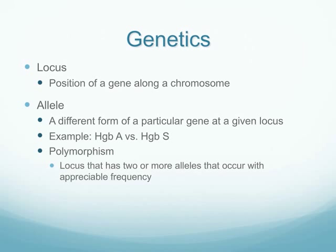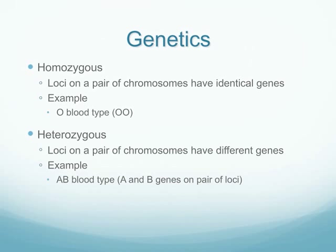The locus is the position of a gene on a chromosome, and the allele is the particular expression of the gene at that locus. For example, we can have an allele for hemoglobin A versus an allele for hemoglobin S, which is what we find in sickle cell anemia. In a homozygous situation we have two identical genes, whereas in a heterozygous situation we have two different genes — for example, O blood type is O and O, whereas AB blood type is A and B.